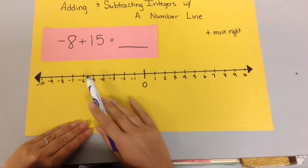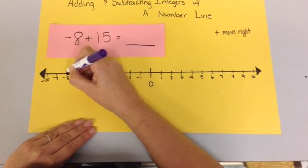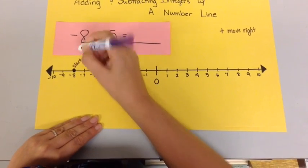So, I have negative 8 plus 15. I'm going to start at negative 8. This is my starting point. And I need to add 15 to that,